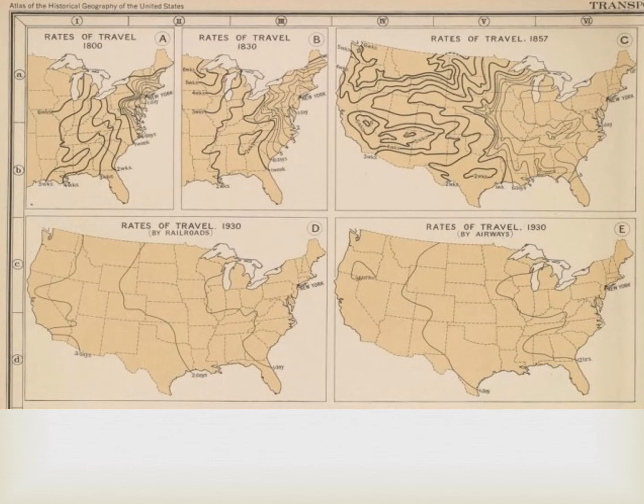Now tell me a story about this isoline map. What is the data? What is it telling us? What questions or observations do you have? Write down some in your notes so we can discuss back in class.